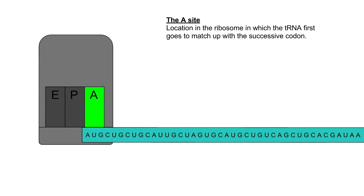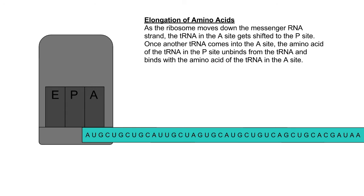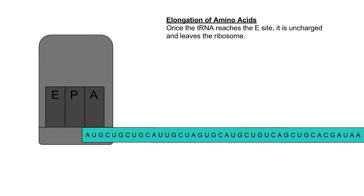The A site is the location in the ribosome where the tRNA first goes to match up with the successive codon. As the ribosome moves down the mRNA, the tRNA in the A site moves to the P site. Once another tRNA comes into the A site, the amino acid of the tRNA in the P site unbinds from the tRNA and binds to the amino acid of the tRNA in the A site. The ribosome moves further down and the tRNA in the P site moves to the E site, where it is uncharged and leaves the ribosome.